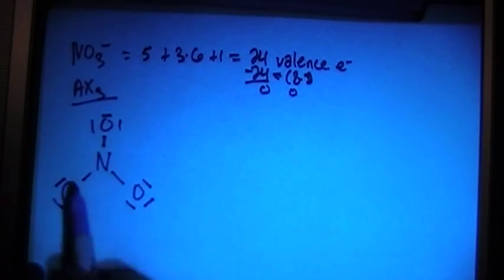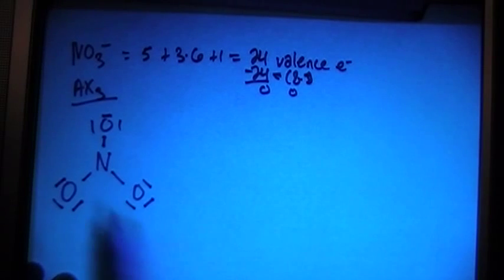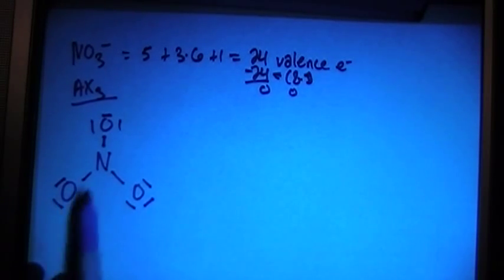Then we can add in all the extra electrons to make each oxygen have its full octet. So that's 24 electrons, there's 8, 8, and 8. It's 24, but if you look, the nitrogen does not have a full octet.